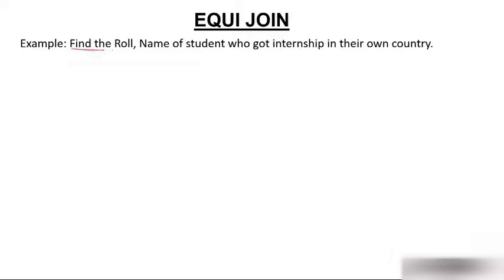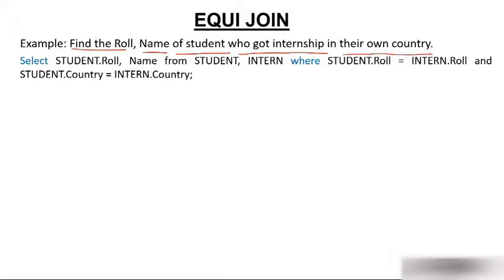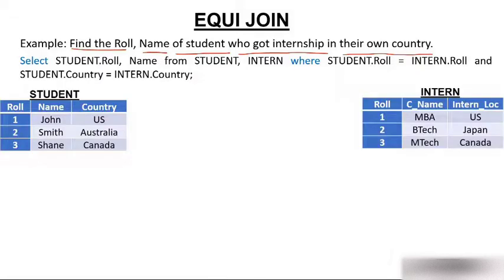Find the role number and name of students who got internship in their own country. One table has information of role number and name, and another table has role number and internship location. Let's see the query for these two tables.